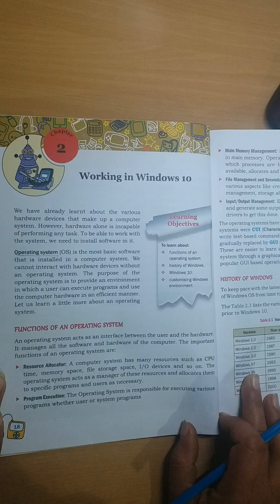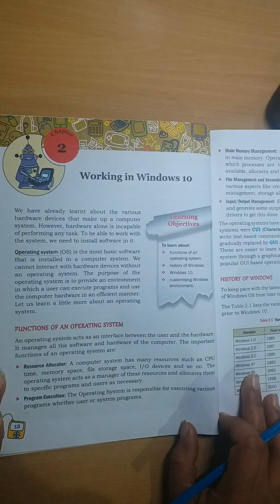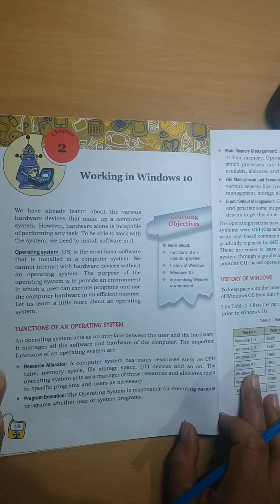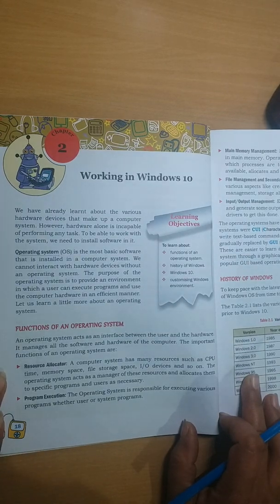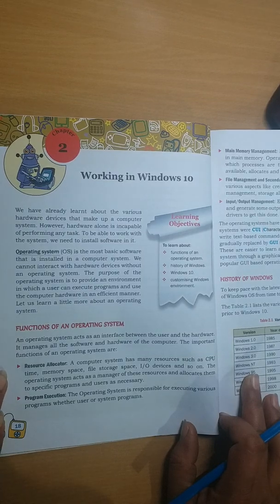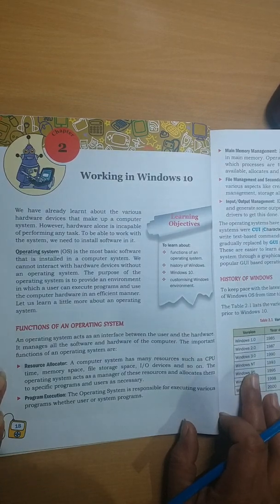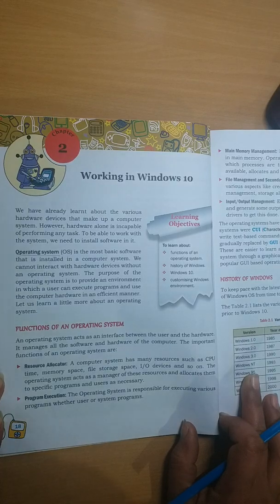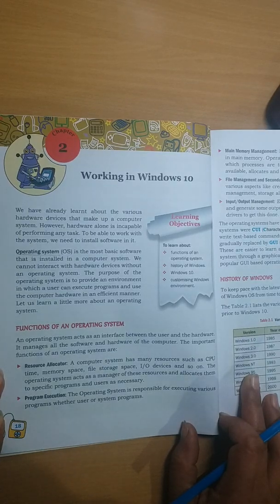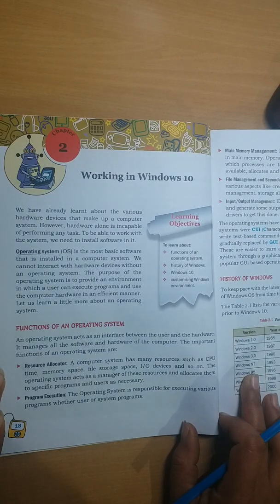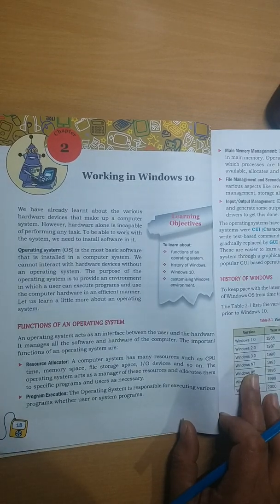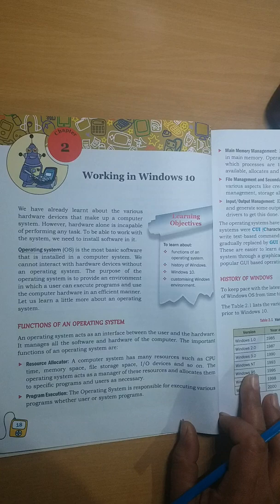The operating system is an interface between the user and the computer hardware. It is considered the basic software required by the computer system to work. We cannot interact with hardware devices without an operating system — without it, the computer would be considered a dumb machine that we can't work with.